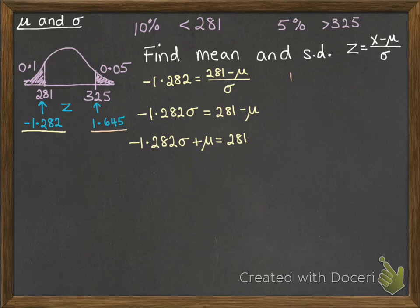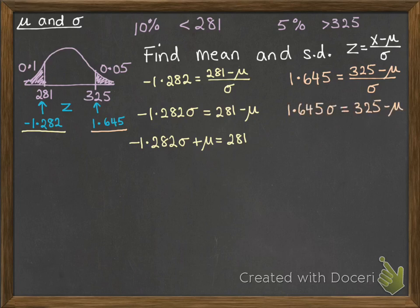Our second equation is for the 1.645. The x value for that was 325 minus mu over sigma. Rearrange this one, and we've got our second equation in that form of something sigma plus something mu equals something.